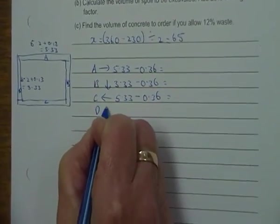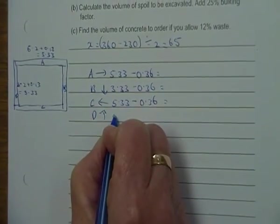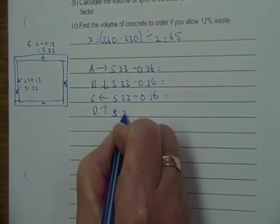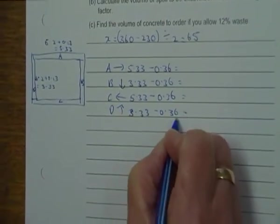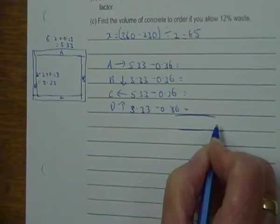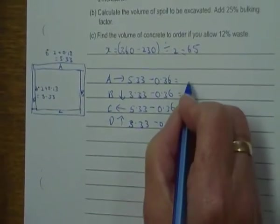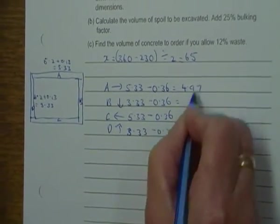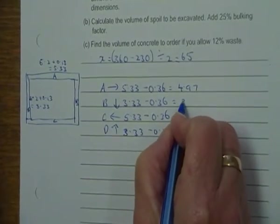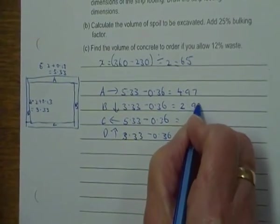D going up is 3.33 minus 0.36, and we get the calculations. A is going to be 4.97, B is 2.97.